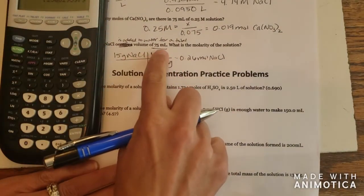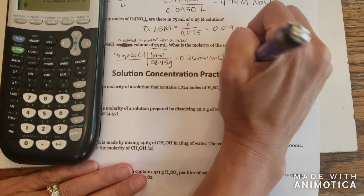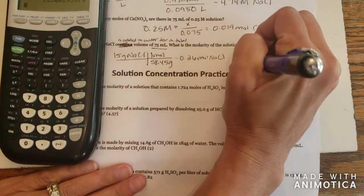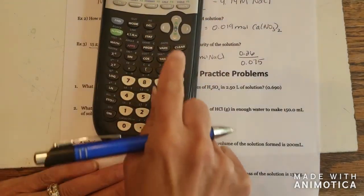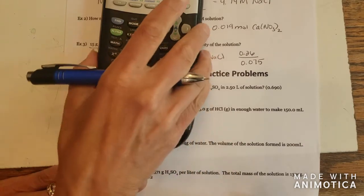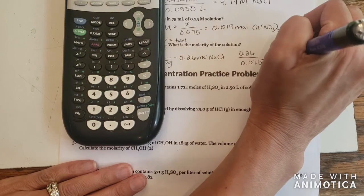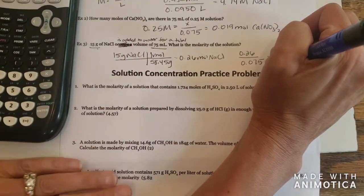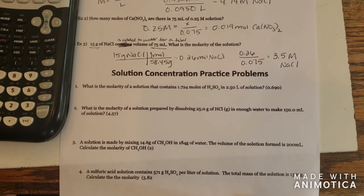So now we're going to divide that by the volume in liters. So 0.26 moles divided by converting your milliliters into liters, 0.075 liters. And we get 3.5 molar sodium chloride solution.